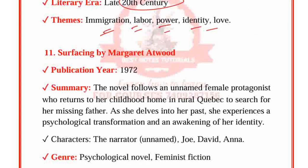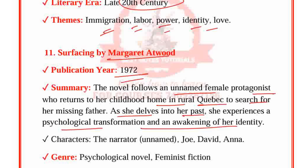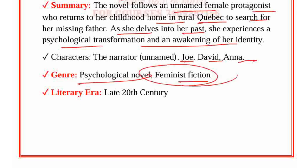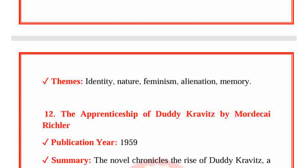Surfacing by Margaret Atwood, published in 1972. This novel follows an unnamed female protagonist who returns to her childhood home in rural Quebec to search for her missing father. As she delves into her past, she experiences a psychological transformation and an awakening of her identity. Characters: The narrator (unnamed), Joe, David and Anna. Genre: Psychological novel, Feminist fiction. Period: Late 20th century. Themes: Identity, Nature, Feminism, Alienation and Memory.